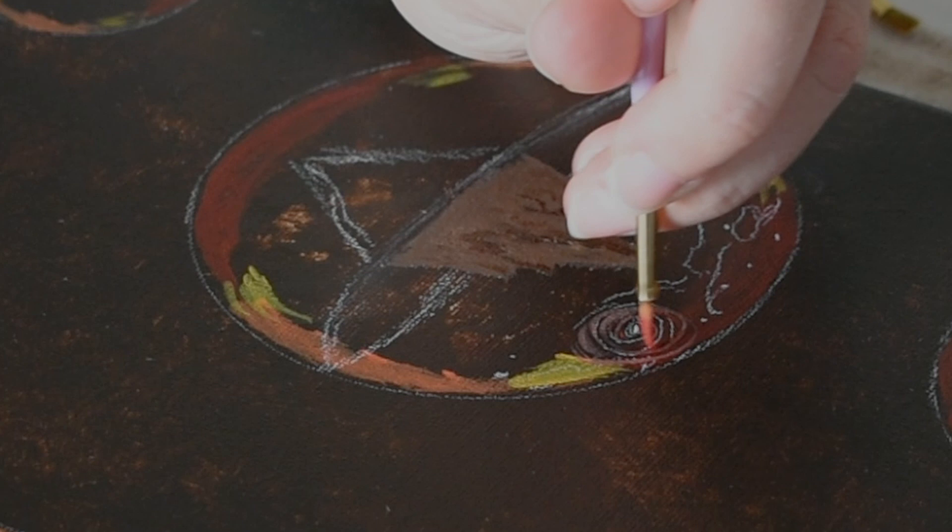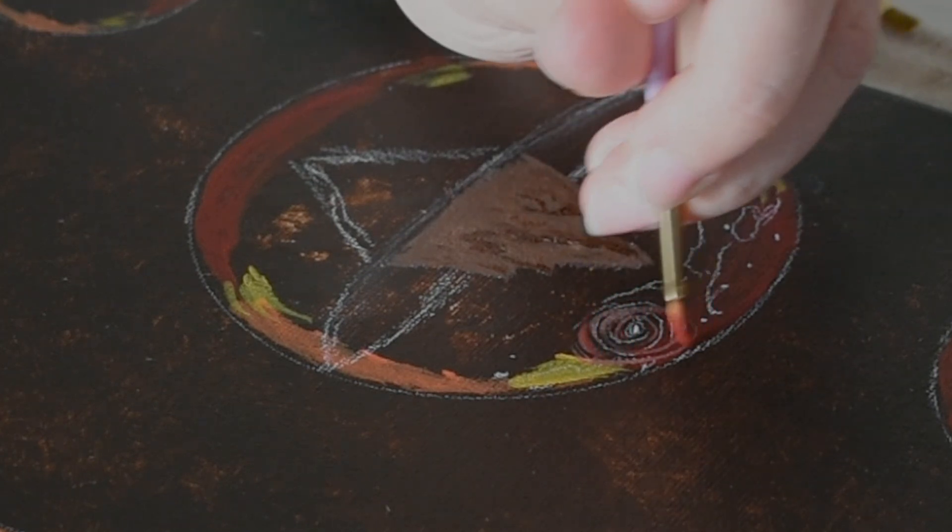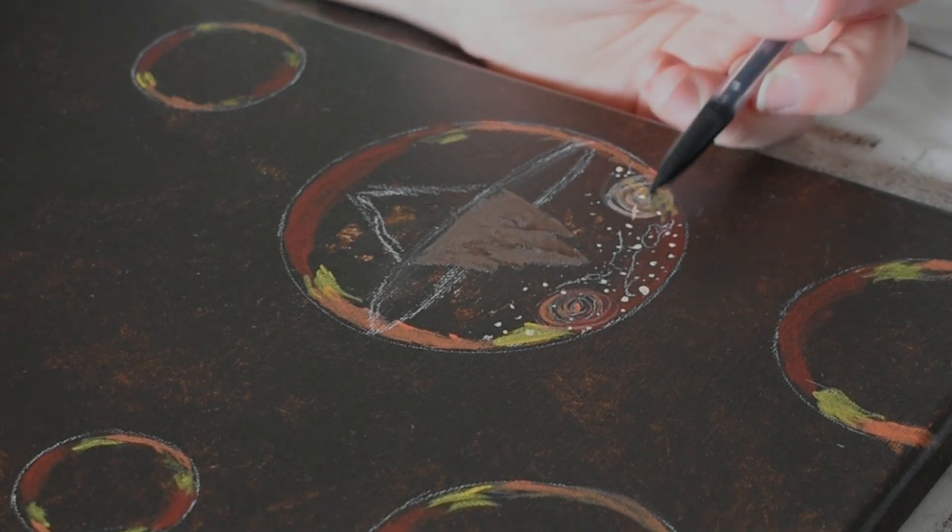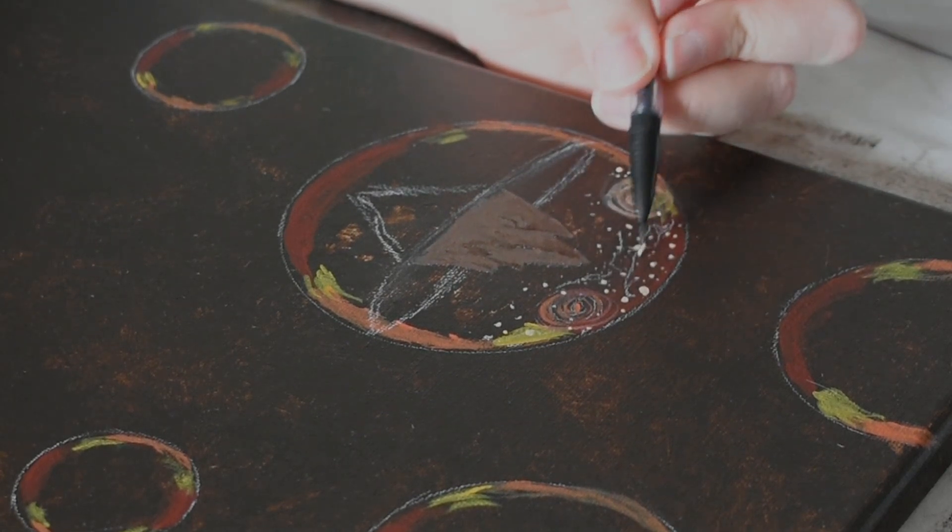I used a variety of items around the house to trace out different sized circles with a white charcoal pencil. Then I used the flame, auburn, and marigold colors to create the effect of a reflective bubble.